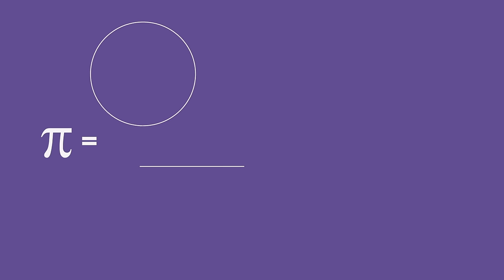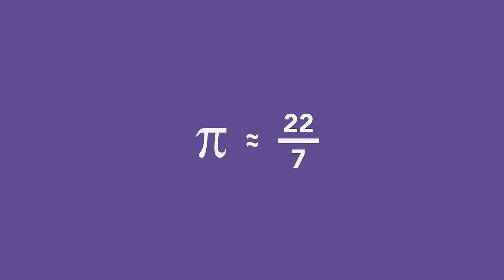Similarly, the famous irrational number pi is always equal to exactly what it represents, the ratio of a circle's circumference to its diameter. Approximations like 22 over 7 or 355 over 113 will never precisely equal pi.